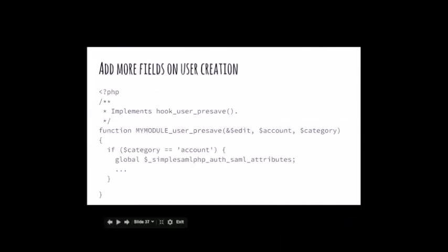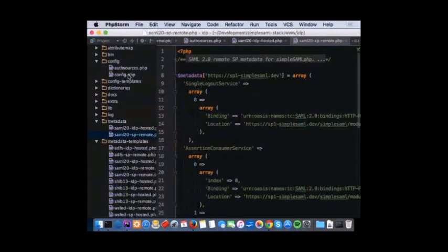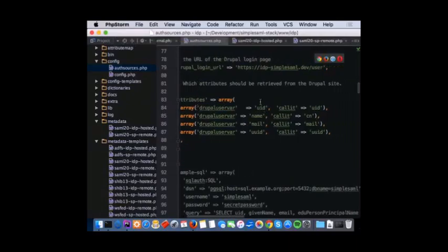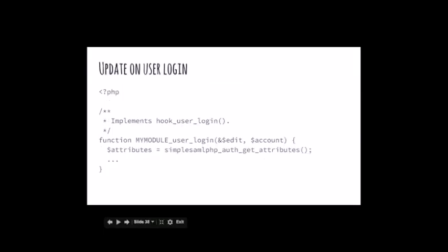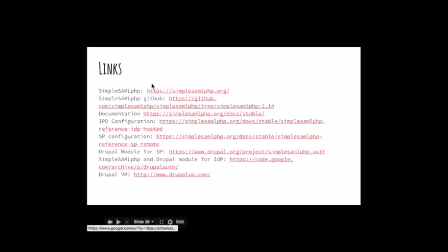If you want to add more fields on user creation, you can use the hook user_presave, and then you have the global SimpleSAMLphp SAML attributes variable that you can use. From there you can grab all the fields, and as I mentioned, you can name them from the authsources of the IDP. The attributes you can add all the fields you want here will be brought from the IDP to the service provider. If you want to update the fields on login, you can use the hook user_login and use the same function to get the attributes of the user. There are also some links you can use — the SimpleSAMLphp link, the GitHub documentation, IDP configuration, SP configuration, Drupal module for SP, and Drupal module for the IDP.